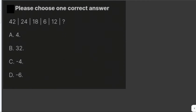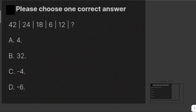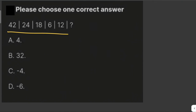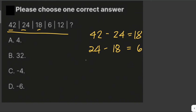We're given this series, which is similar to the Fibonacci sequence, but in this case each number equals the difference between the two preceding numbers. For example, 42 minus 24 equals 18, then 24 minus 18 equals 6, and 18 minus 6 equals 12.